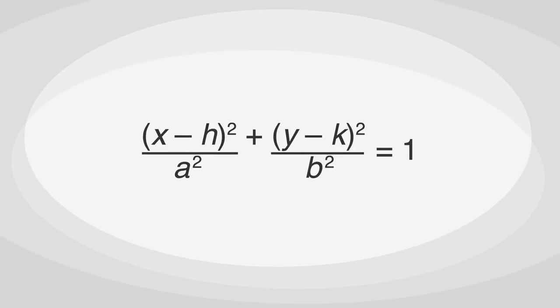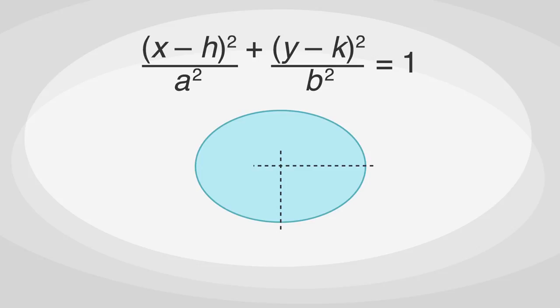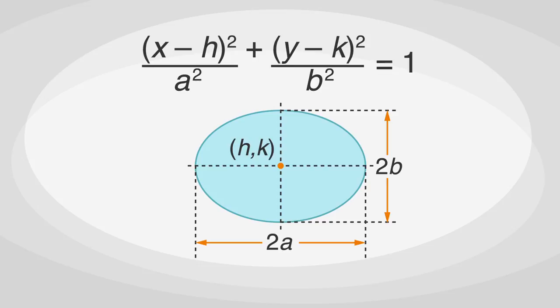The general equation for an ellipse is x minus h squared over a squared plus y minus k squared over b squared equals 1. Just like in a circle, the center of an ellipse is at h,k. a is half the length of the horizontal axis, or the width of the ellipse, and b is half the length of the vertical axis, or the height of the ellipse.